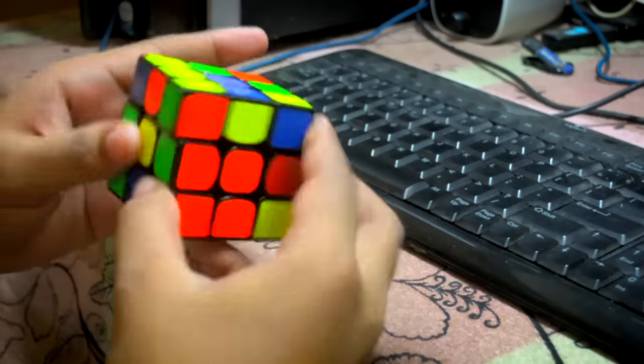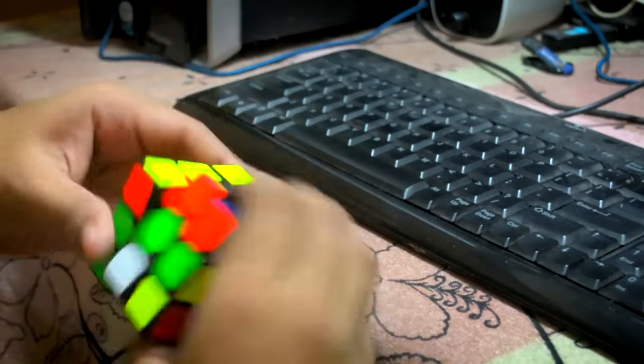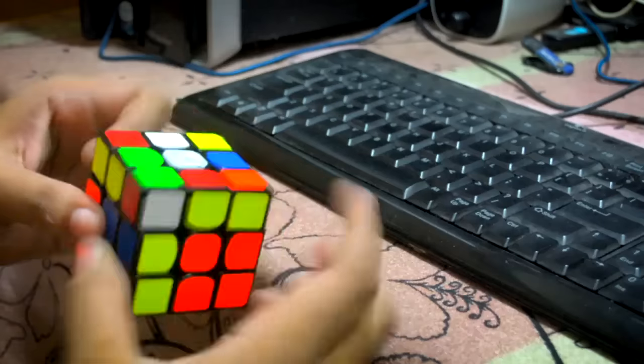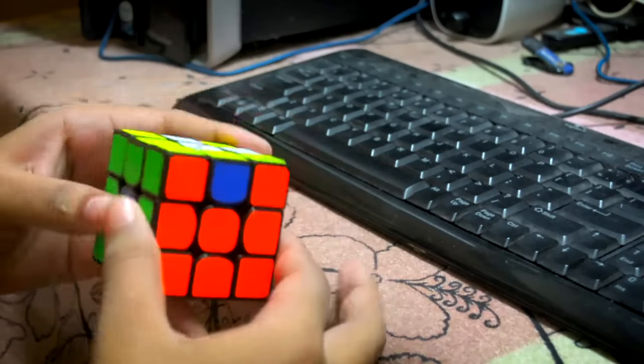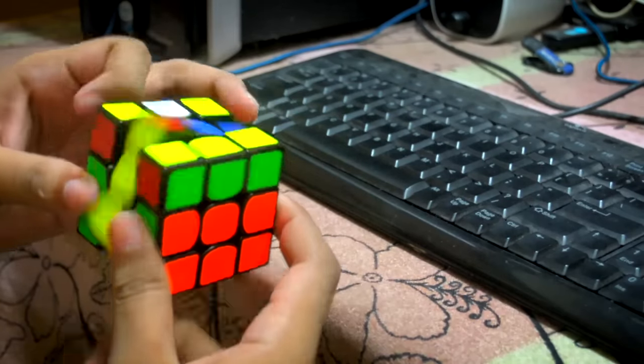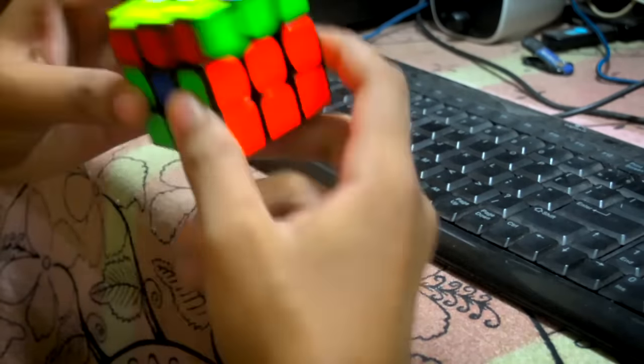Talking about the squared off corners, corner twisting can occur although it has only happened to me once. On my stock tensions, I had got a corner twist but after adjusting the tensions, I have not got any corner twist. Popping is negligible.